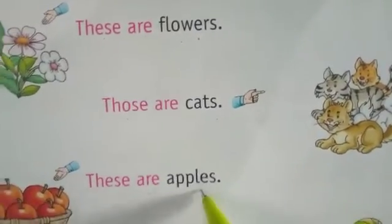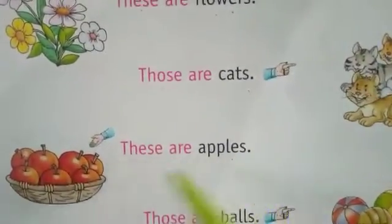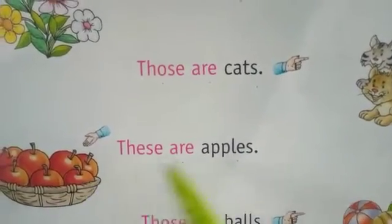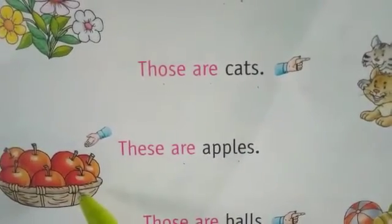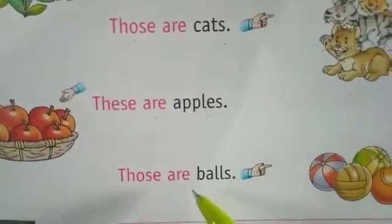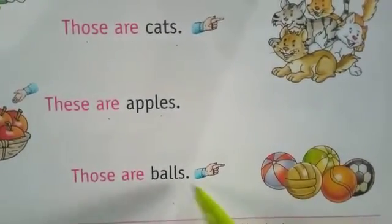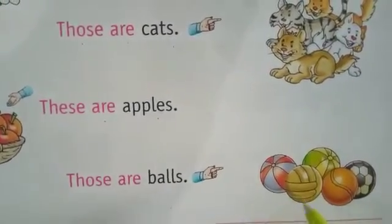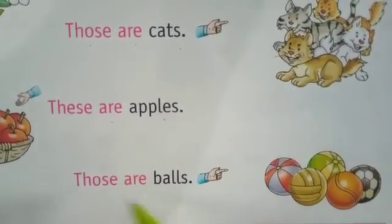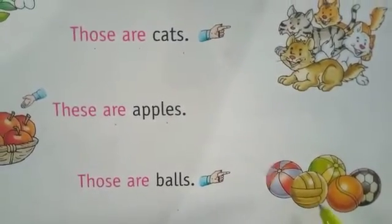These are apples. These are apples. Yeh seb hain. Yeh seb hain. Those are balls. B-A-L-L-S, balls. One or more ball hain, toh balls ho gaya. Those are balls. Woh sab gind hain.